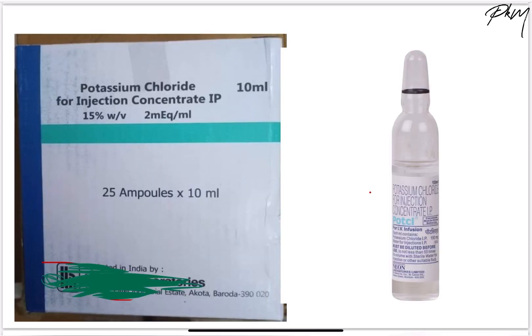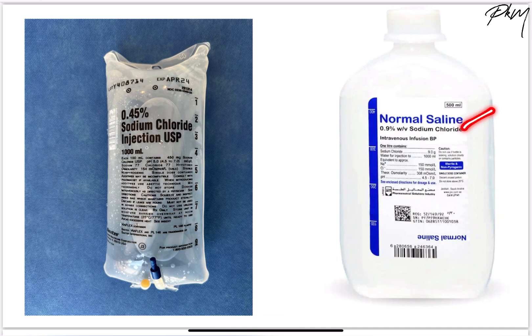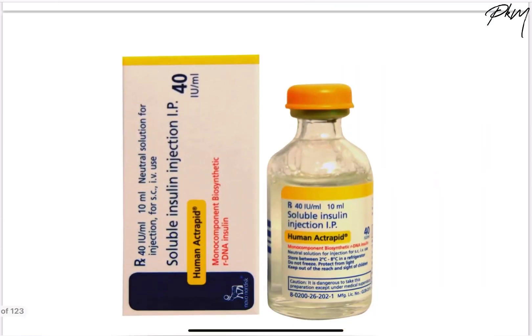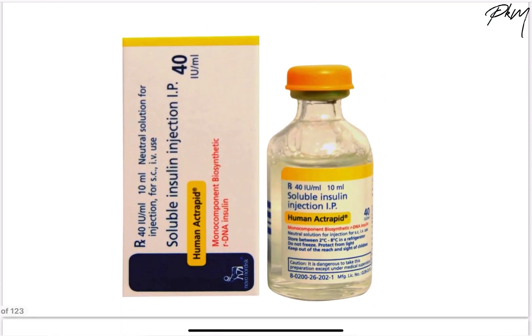This is a picture of a KCl ampoule, where each ampoule contains 10 mL of KCl, and every mL of KCl contains 2 mEq of potassium chloride, so for every 10 mL there are 20 mEq of potassium. Next is an image of normal saline — 0.9% normal saline — and half normal saline, or 0.45% normal saline. Normal saline is isotonic with osmolarity of 308 mOsm per litre, while half normal saline is hypotonic with sodium 77 mEq per litre, chloride 77 mEq per litre, and osmolarity of 154 mOsm per litre.